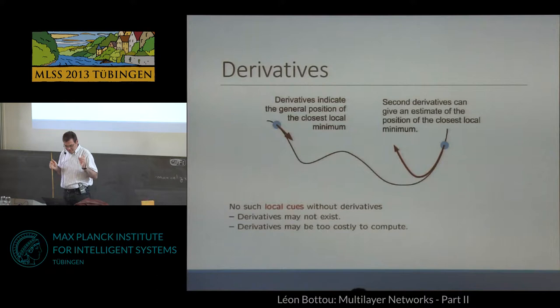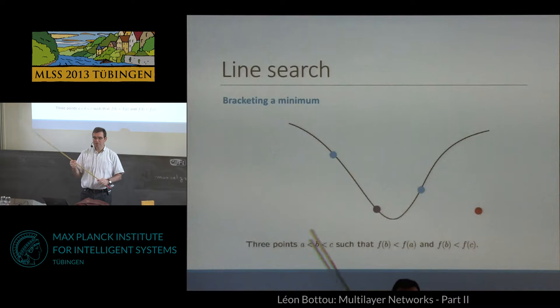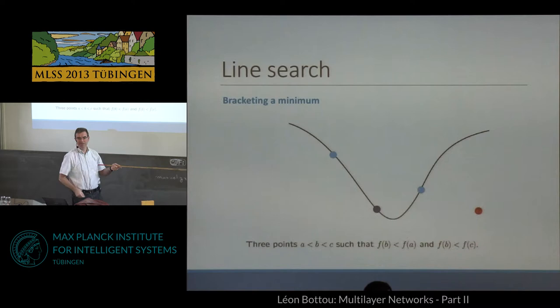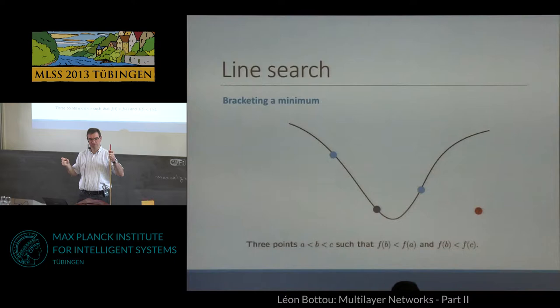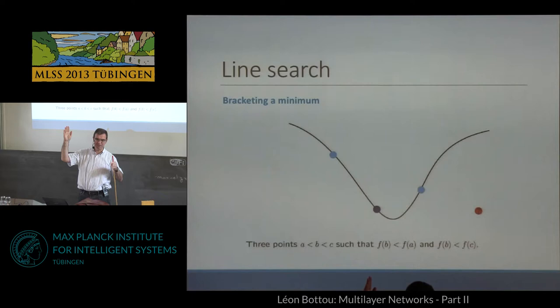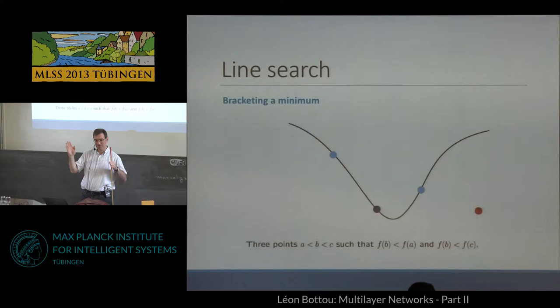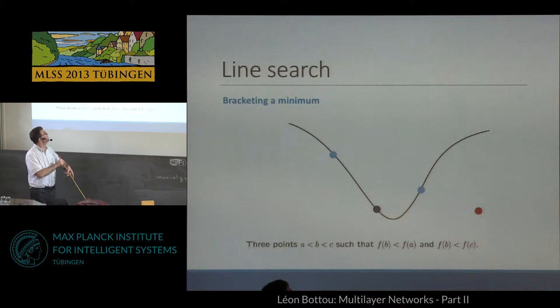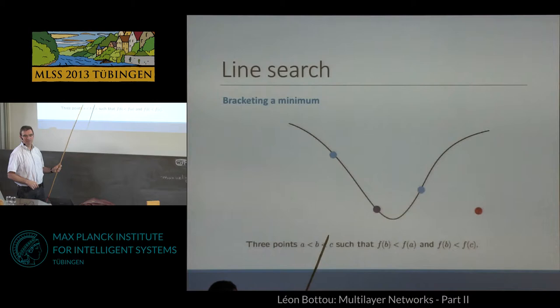Now I'm going to speak about line search. Suppose you're in a big landscape and somebody gives you a direction, and you want to find the local minimum in that direction. You want to find the minimum in a very secure way, so you want to be sure that between two points there is a minimum. When you find a zero of a function on the real line, you do it by bracketing — you find two points where the function is positive and negative, and because the function is continuous there should be a zero in between, and you keep reducing the bracket. To bracket a minimum, you need three points: one in the middle where the function is less than the points around it. You search brutally until you find this.